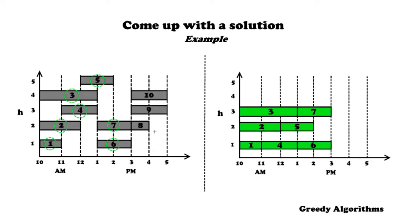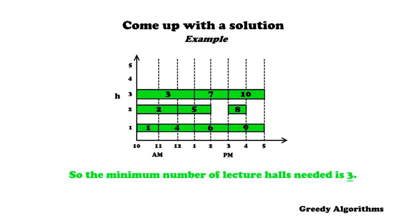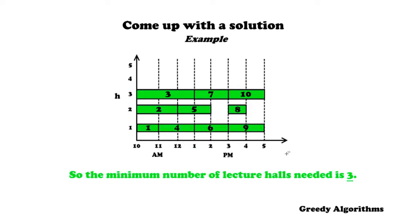For the next lecture, we check the hall that becomes available first — lecture hall 2 — and it is compatible, so we assign it there. Then for lectures 9 and 10: lecture 9 goes into lecture hall 1, and lecture 10 goes into lecture hall 3. We have now scheduled all lectures. The minimum number of lecture halls needed is 3, not 5, which requires fewer resources — that's why this algorithm is so useful.